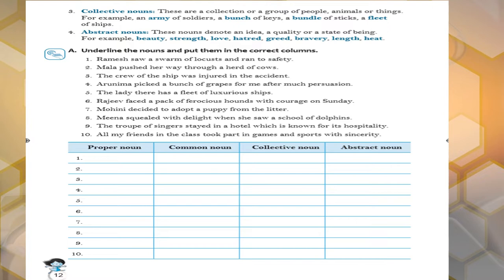Finally, the last one, abstract nouns. These nouns denote an idea or a quality. You will feel like adjectives are there, but these are not adjectives. These are a state of being something like beauty, strength, love.